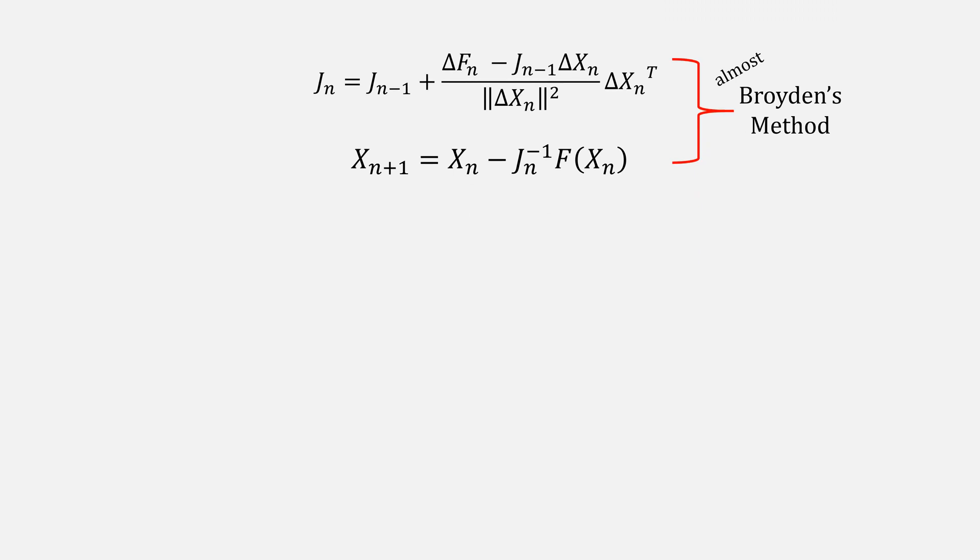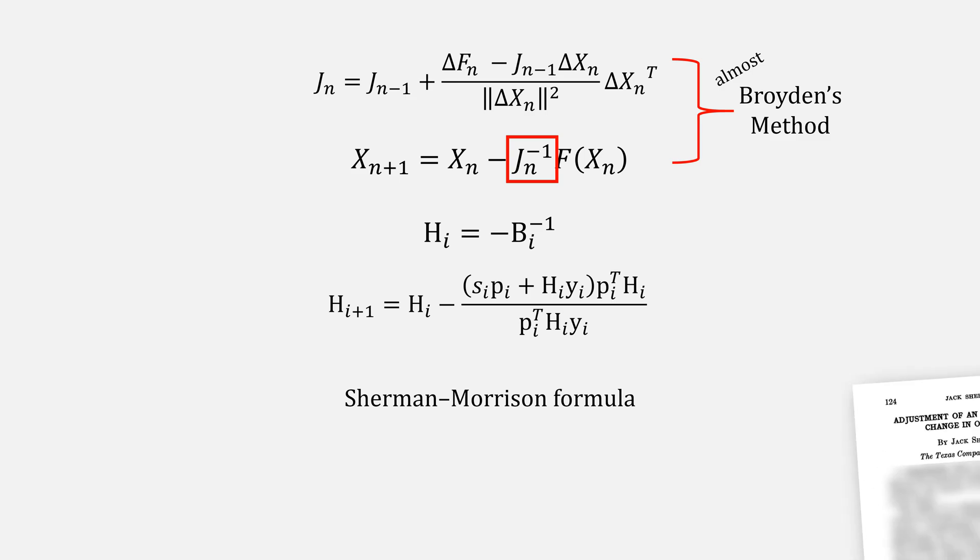Broyden actually takes things one step further from his almost Broyden's method by noticing this j inverse. What if we could solve for the inverse of j rather than j? And he does that, letting h, his approximation to the inverse, be this equation. In reality, you could use what's known as the Sherman-Morrison formula, cited from this paper, that looks like this, to solve for the updating inverse, but Broyden actually didn't know this formula.